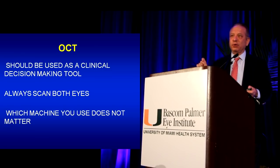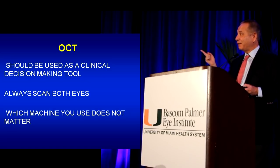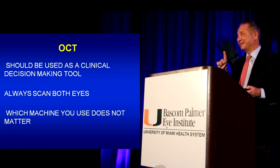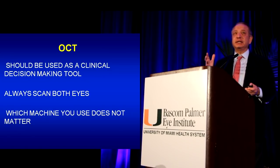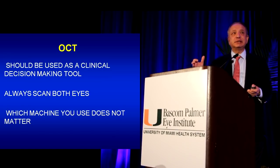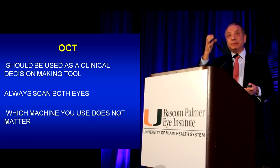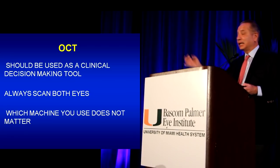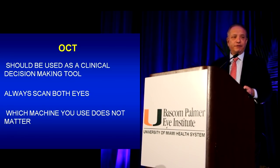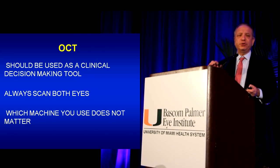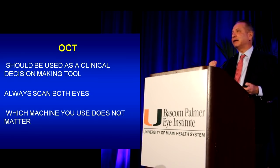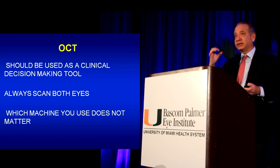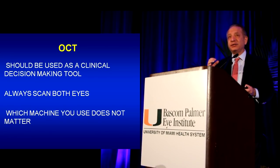Always, always scan both eyes. Scan the right eye first and the left eye second, always. The reason is that macular disease is frequently symmetrical, and asymmetry may be useful in making a diagnosis. And finally, which OCT you use really does not matter. Even using the oldest and most basic OCT, the Stratus, you can make very good clinical decisions.